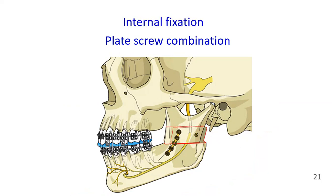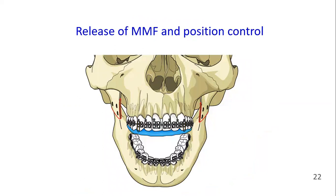After completion of osteosynthesis on both sides, the MMF is released and the resulting occlusion is checked against the pre-planned position. The splint may be fixed to the maxillary teeth with a few thin wires and left in place during the healing phase to allow for neuromuscular adaptation and position control.